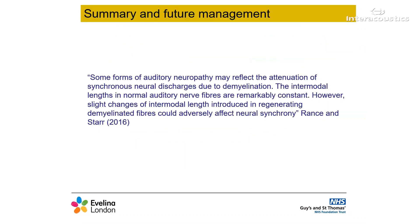Some forms of auditory neuropathy may reflect the attenuation of synchronous neural discharges due to demyelination. The intermodal lengths in auditory nerve fibres are remarkably constant. However, slight changes of intermodal length introduced in regenerating demyelinated fibres could adversely affect neural synchrony — Rance and Starr 2016. There appears to be a link in the improvement in the seizures based on myelination and in the maturation of the ABR, and thus we hypothesize that this is due to the myelination occurring along the auditory nerve. The external peer reviewer agreed with this hypothesis.